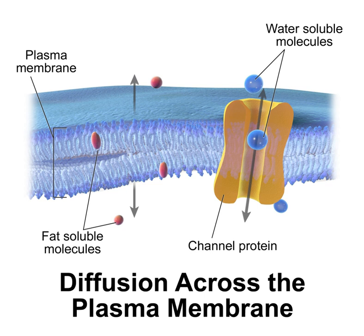Cell membranes contain a variety of biological molecules, notably lipids and proteins. Composition is not fixed but constantly changing for fluidity and in response to environmental changes, even fluctuating during different stages of cell development. The amount of cholesterol in human primary neuron cell membranes changes and affects fluidity throughout development. Material is incorporated into or deleted from the membrane by various mechanisms, including fusion of intracellular vesicles, formation of blebs, and exchange of molecules between the lipid and aqueous phases.